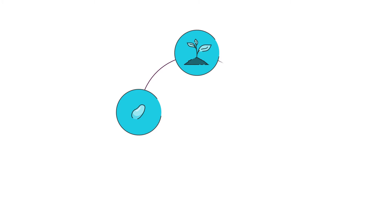Instead, take the same idea of a cyclical process, but start with just one element on the screen. Now everyone's focused on the same thing. You can explain it, and then use animation to click and bring in the second part of the process. Everyone's attention shifts to that, and your explanation accompanies it. Click for the third element, and then click for the final element. It's a great way to control the entire presentation and ensure that everyone follows along.